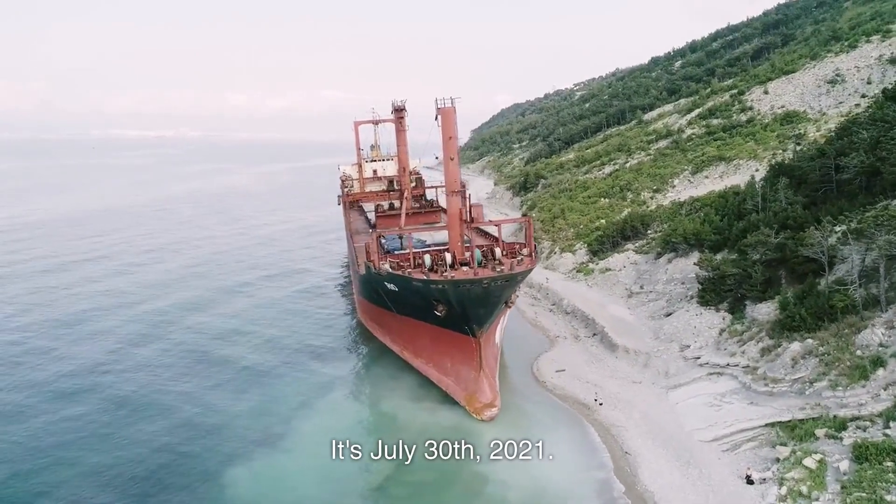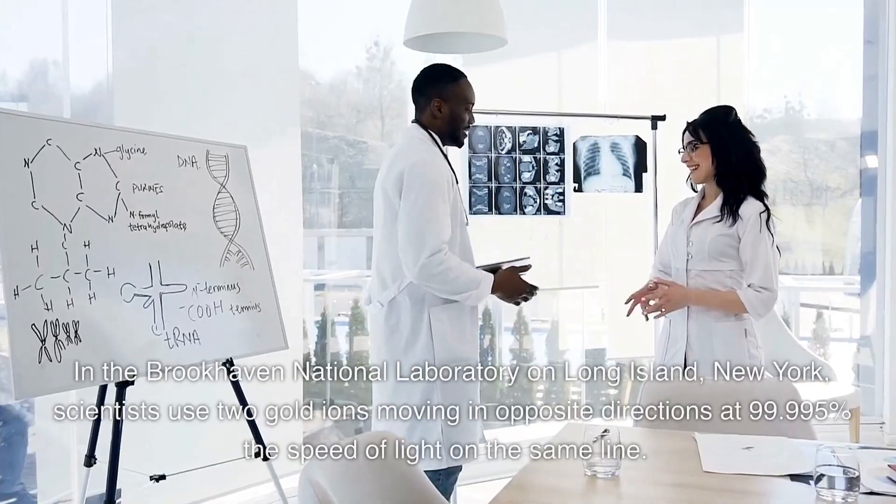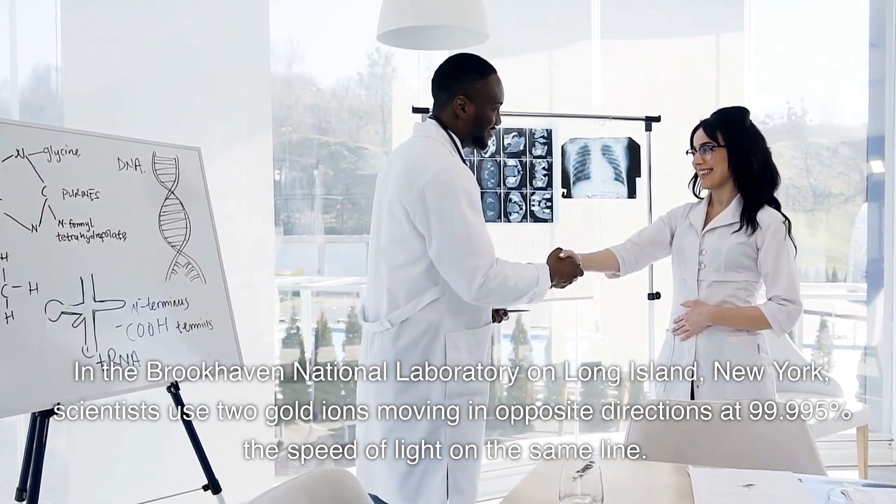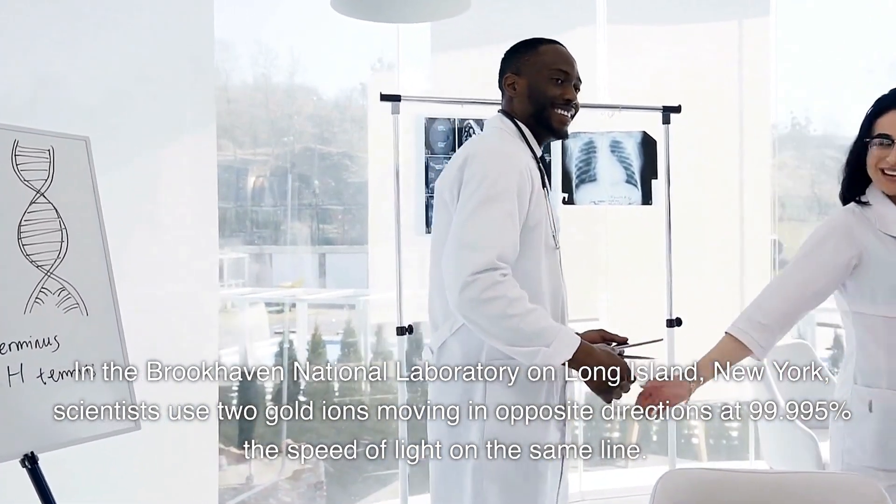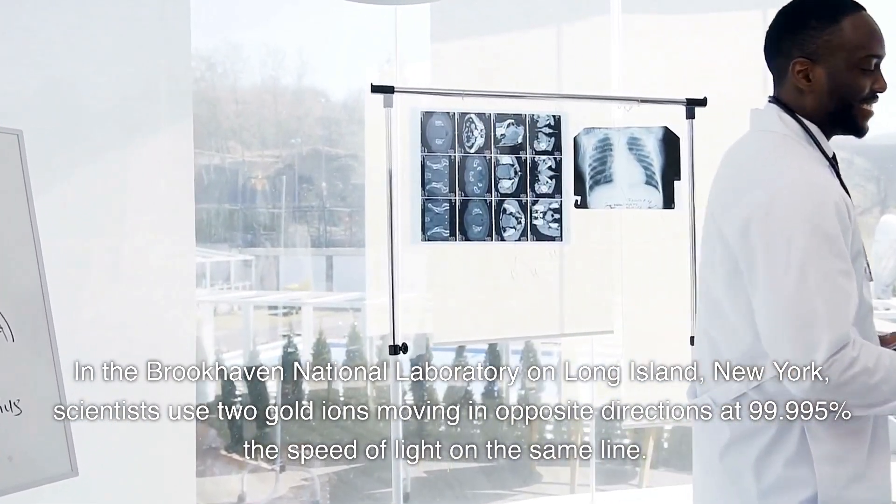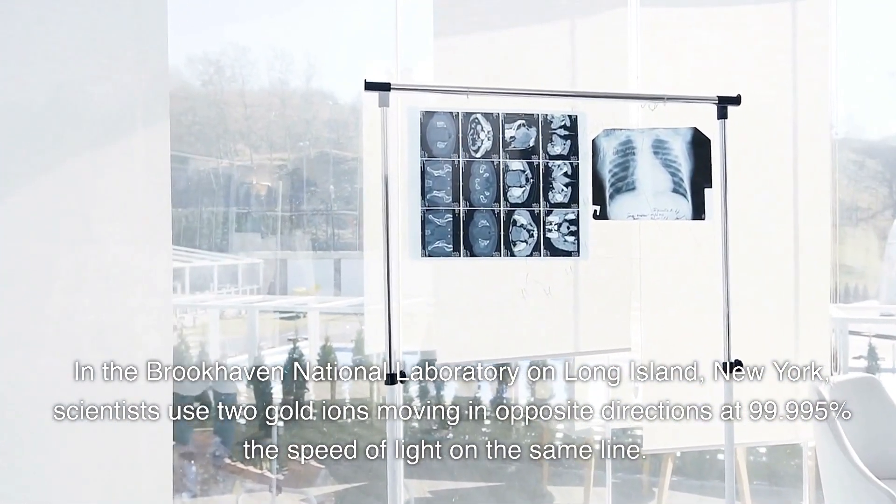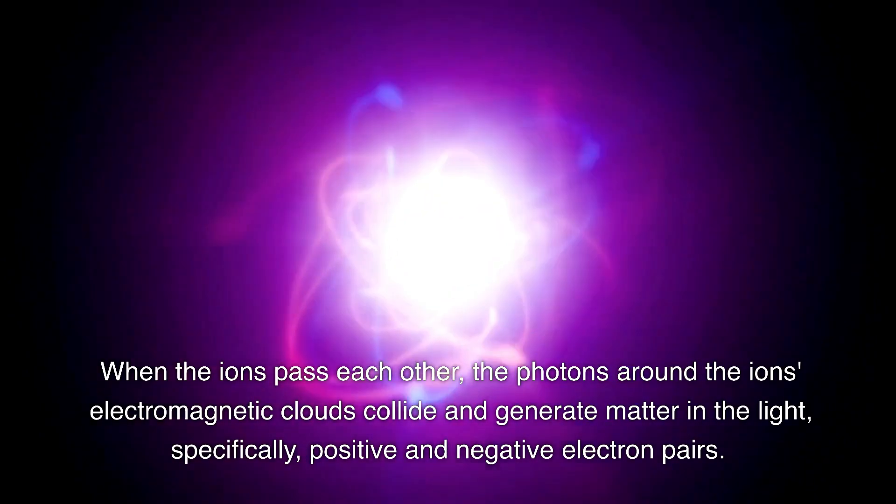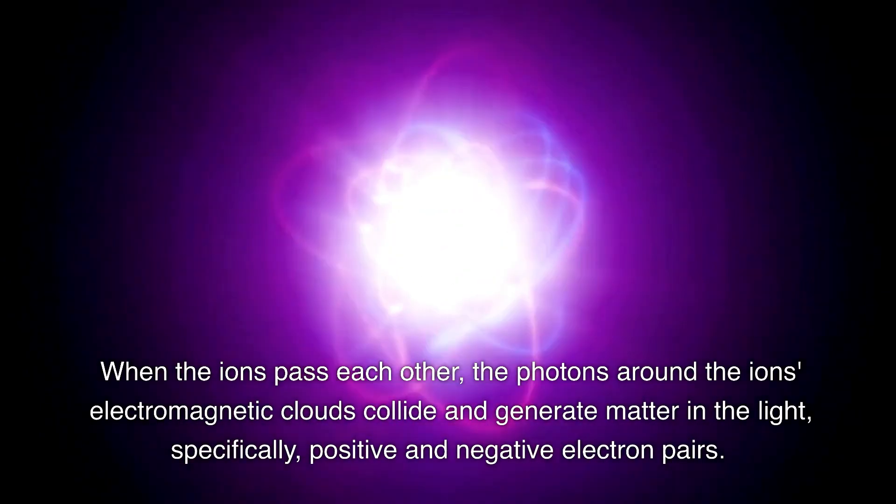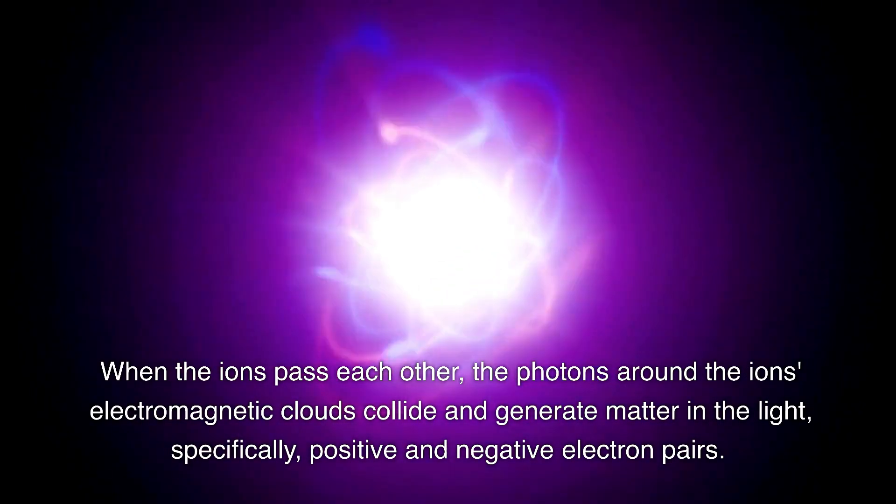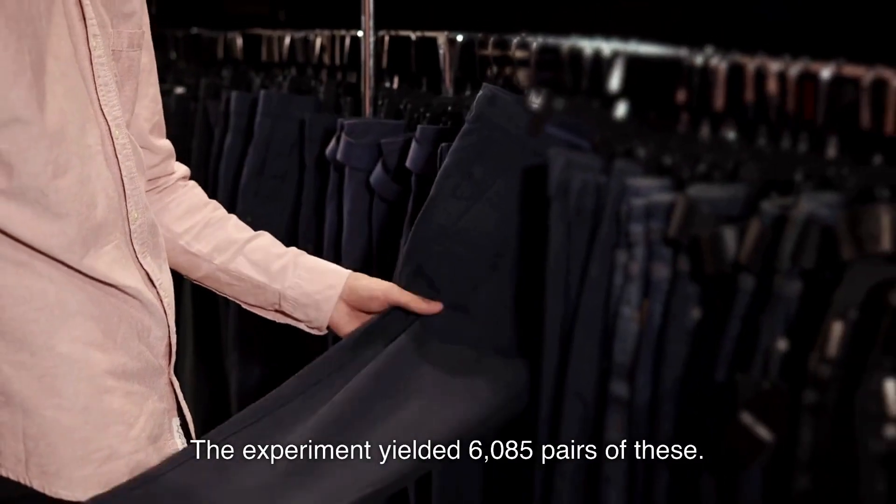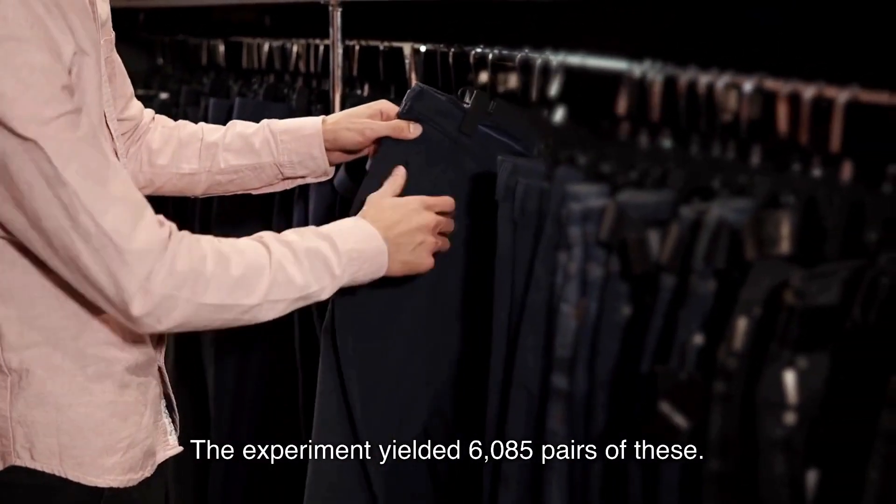It's July 30, 2021. In the Brookhaven National Laboratory on Long Island, New York, scientists use two gold ions moving in opposite directions at 99.995% the speed of light on the same line. When the ions pass each other, the photons around the ions' electromagnetic clouds collide and generate matter in the light, specifically positive and negative electron pairs. The experiment yielded 6,085 pairs of these.